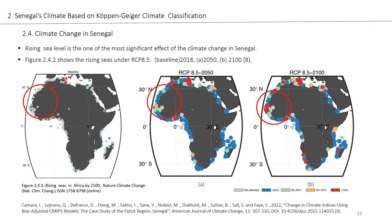Here is another prediction about rising seas. Rising sea level is one of the most significant effects of climate change in Senegal and across Africa and other parts of the world. In these maps, the first one shows the baseline for 2018. In map A we can see the prediction for 2050, and in map B we can see the prediction for 2100. We can see how it is going to change — the red dots are getting bigger and bigger, indicating a 55 percent rise in sea level.